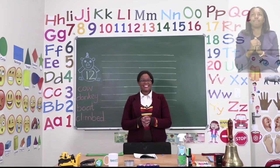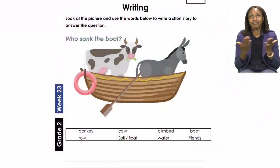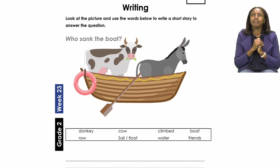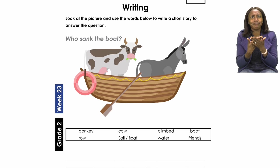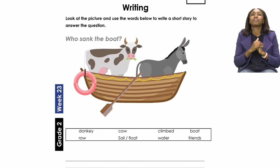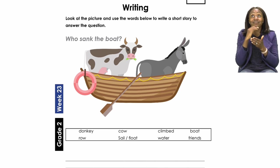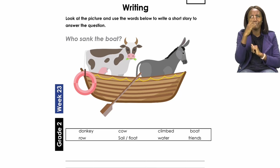For our lesson today boys and girls, we are all going to start on page 12. On page 12, we are going to be doing a writing exercise. It's going to be our job to look at the picture and then use the words below to write a short story. After that, I would like you to try and read your story to someone. So let's start by looking at the picture — it's asking us: who sank the boat?